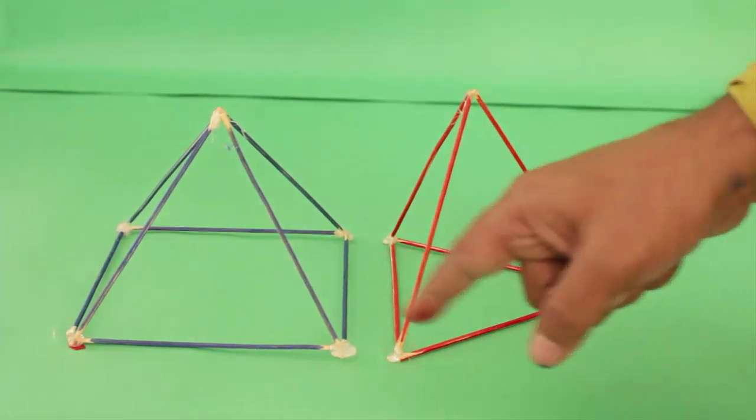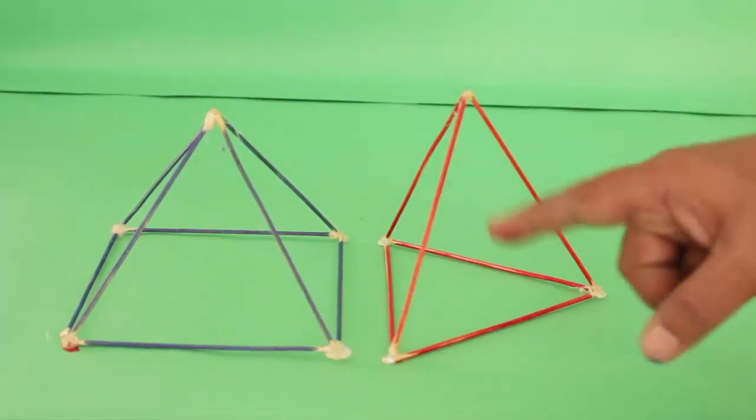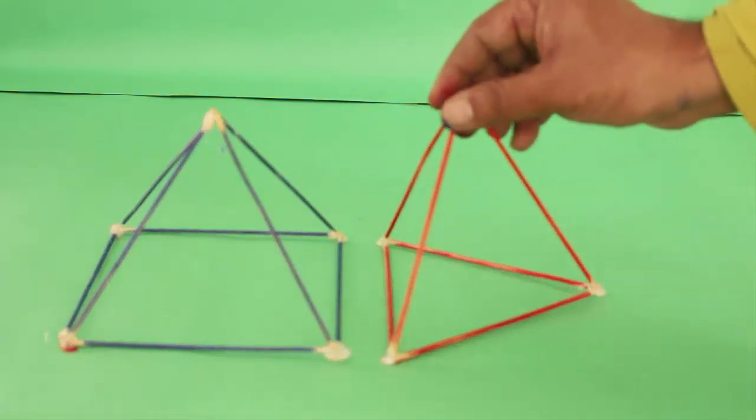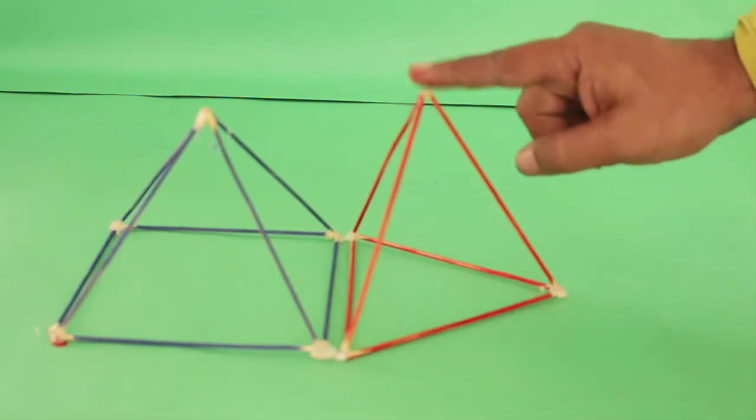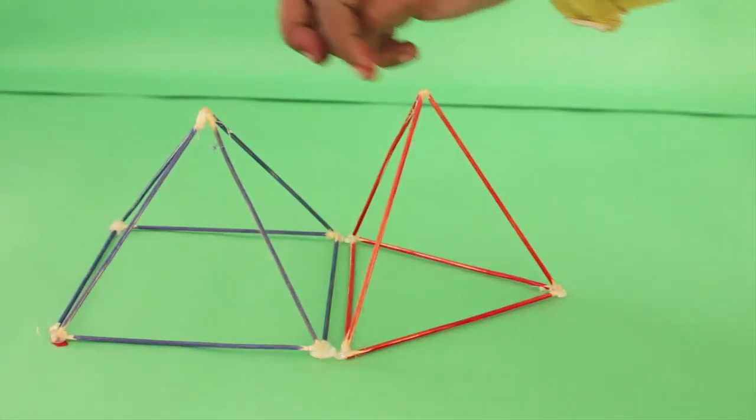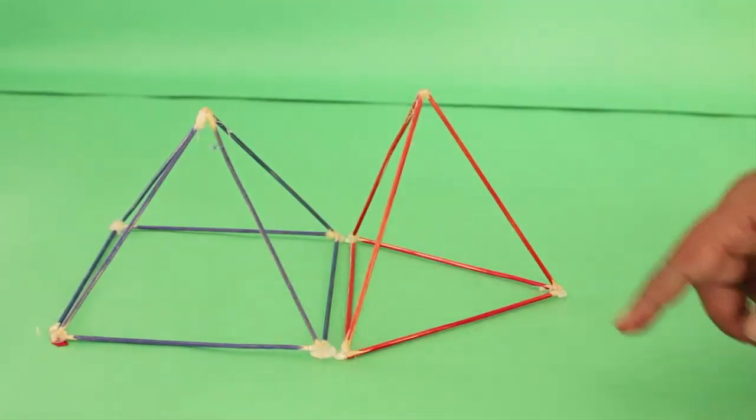Both the pyramid and the tetrahedron are made with equal length straws. We can see that the tetrahedron is slightly higher than the blue pyramid.